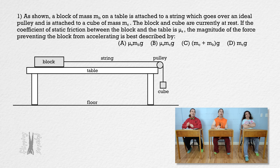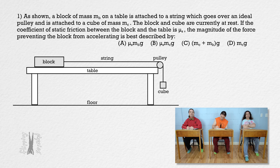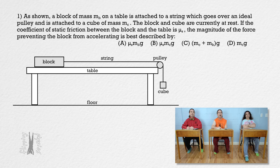Please read question 1. As shown, a block of mass m sub b on a table is attached to a string which goes over an ideal pulley and is attached to a cube of mass m sub c. The block and cube are currently at rest. If the coefficient of static friction between the block and the table is mu sub s, the magnitude of the force preventing the block from accelerating is best described by: choice A, mu_s times m_b times g; choice B, mu_s times m_c times g; choice C, (m_c + m_b) times g; or choice D, m_c times g.